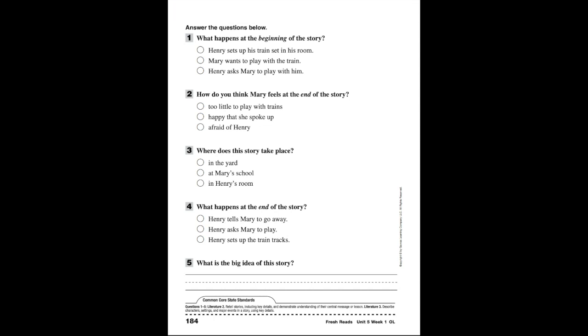...or is it C: Henry sets up the train tracks? This is another type of question asking you to recall facts from the story and know what happens at the beginning part, the middle part, and the end part. Number five: what is the big idea of the story? What is this story mostly about? What's the main idea? Remember, your answers go on a separate piece of paper and submitted for your Class Dojo assignment today in reading portfolio.